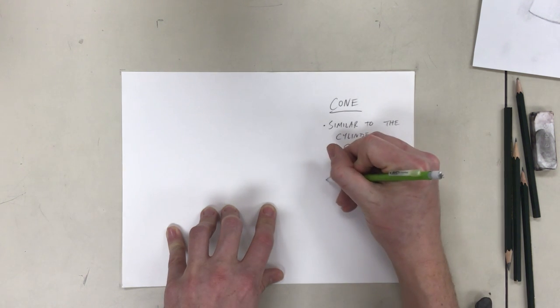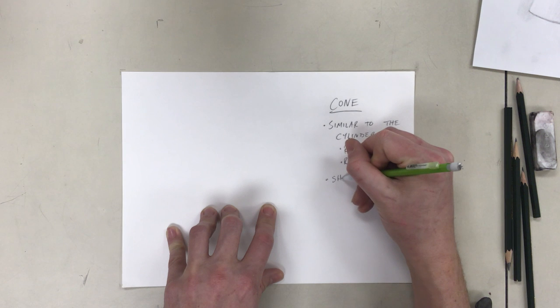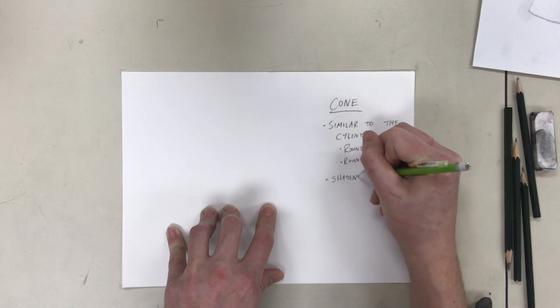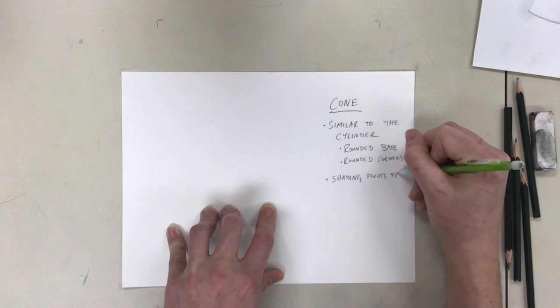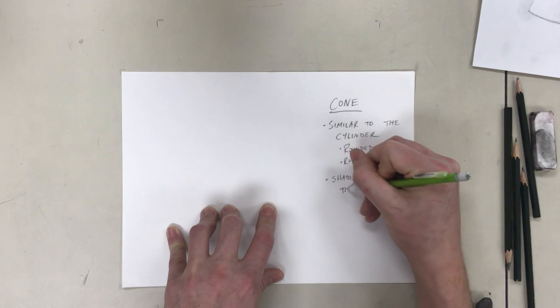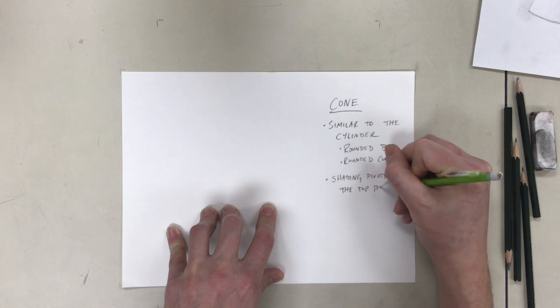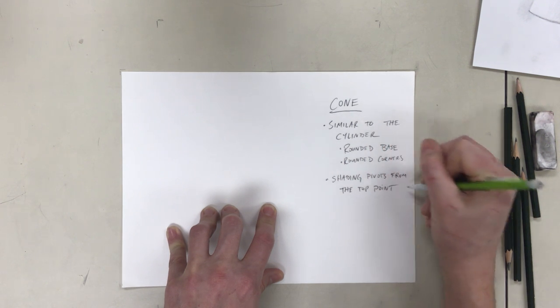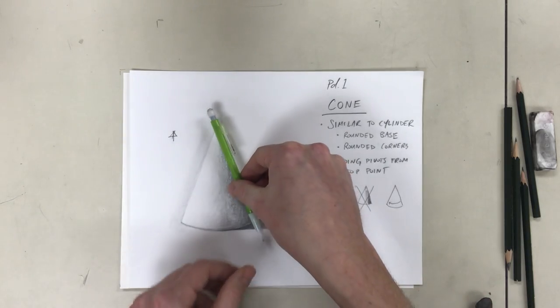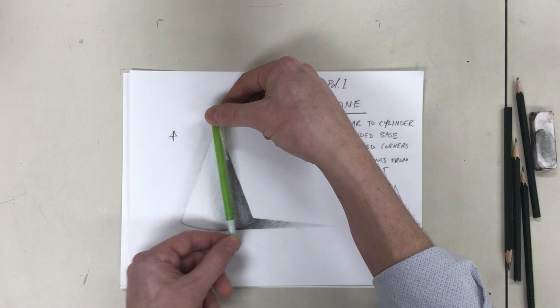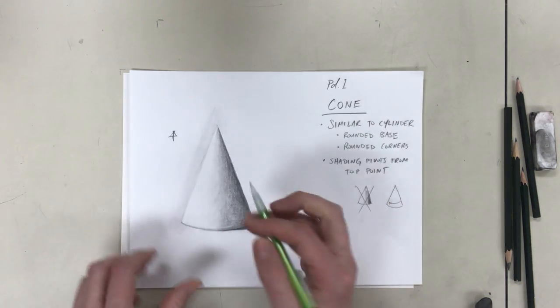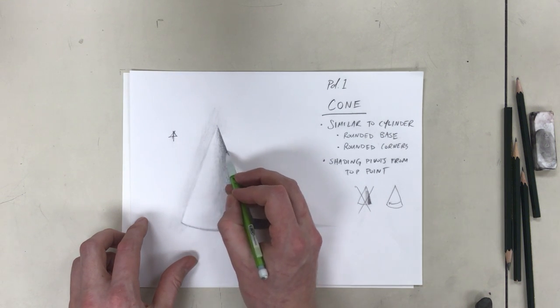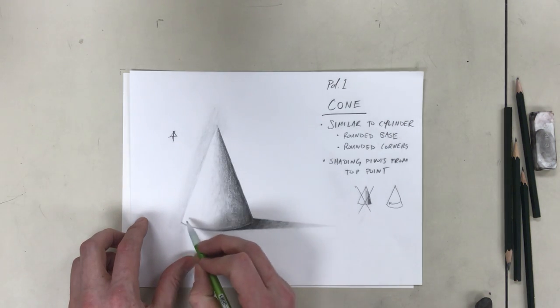And the only other bit of note, so this is a short one, the shading pivots from the top point. So what that's referring to is the shading here, pivoting from the top point. It doesn't go clean across like this, it pivots from the top. So this section will have a very short gradation, this one will have a longer gradation.